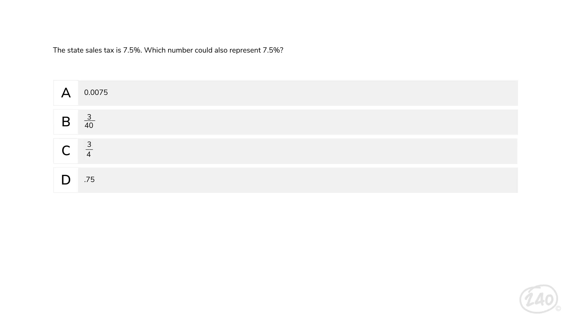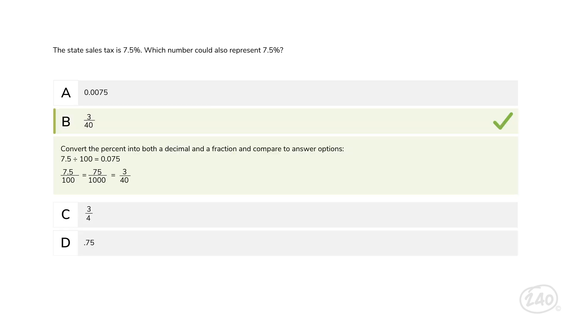Let's start back at the beginning with domain one, math. And let's take a look at a question about number sense. Remember when we talked about percents, decimals, and fractions? Let's practice another question. The state sales tax is 7.5 percent. Which number could also represent 7.5 percent? Because our answer options are both decimals and fractions, we can convert 7.5 percent into both. To convert the percent into a decimal, we need to divide by 100, which results in 0.075. This doesn't match either of our decimal answers, so we can eliminate options A and D. To convert a percent to a fraction, just put the percent over 100 and simplify. This gives us a reduced fraction of 3 40ths. So option B is correct.